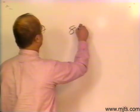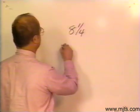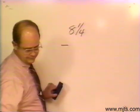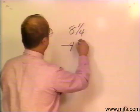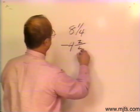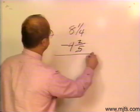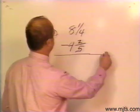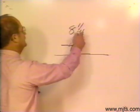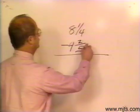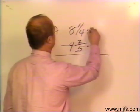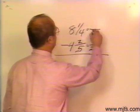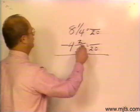we have 8 and 1/4. Subtract from that 4 and 2/5. Now, here again, I need the same common denominator out of those two. And both are divisible by 20. 20 is divisible by both 4 and 5.